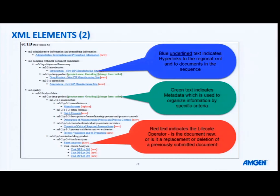It helps the evaluator if you give some extra indication on your hyperlinking name so that they can see clearly what they're about to click on. This will also be important later when you're using a CTD viewing tool and you're looking at all of your dossier, not just an individual sequence. Green text on the XML represents metadata, and this is used to organise your information in the XML and to help both yourselves and your evaluator to identify sets of data within your dossier.